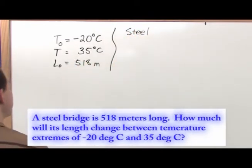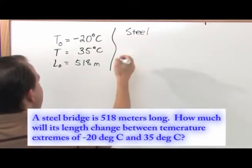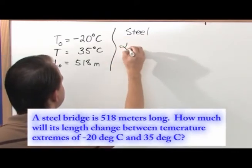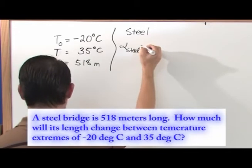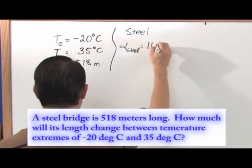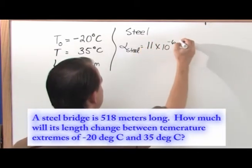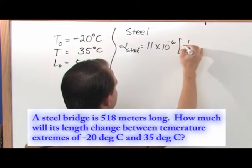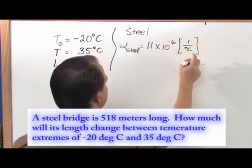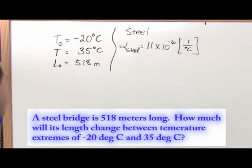We know it's a steel bridge, so right away we're going to look in our table in the book. The coefficient of linear expansion of steel is 11 times 10 to the negative 6, and the unit is 1 over degrees Celsius. I just put the unit there so you know for sure what we're dealing with.